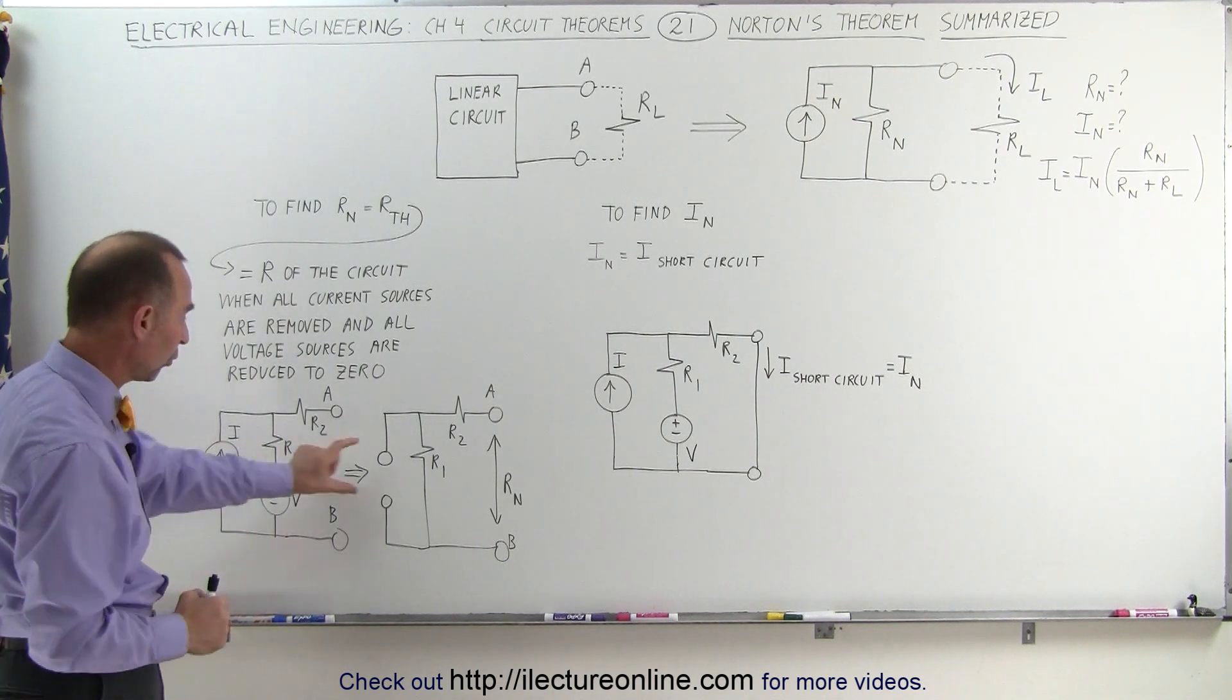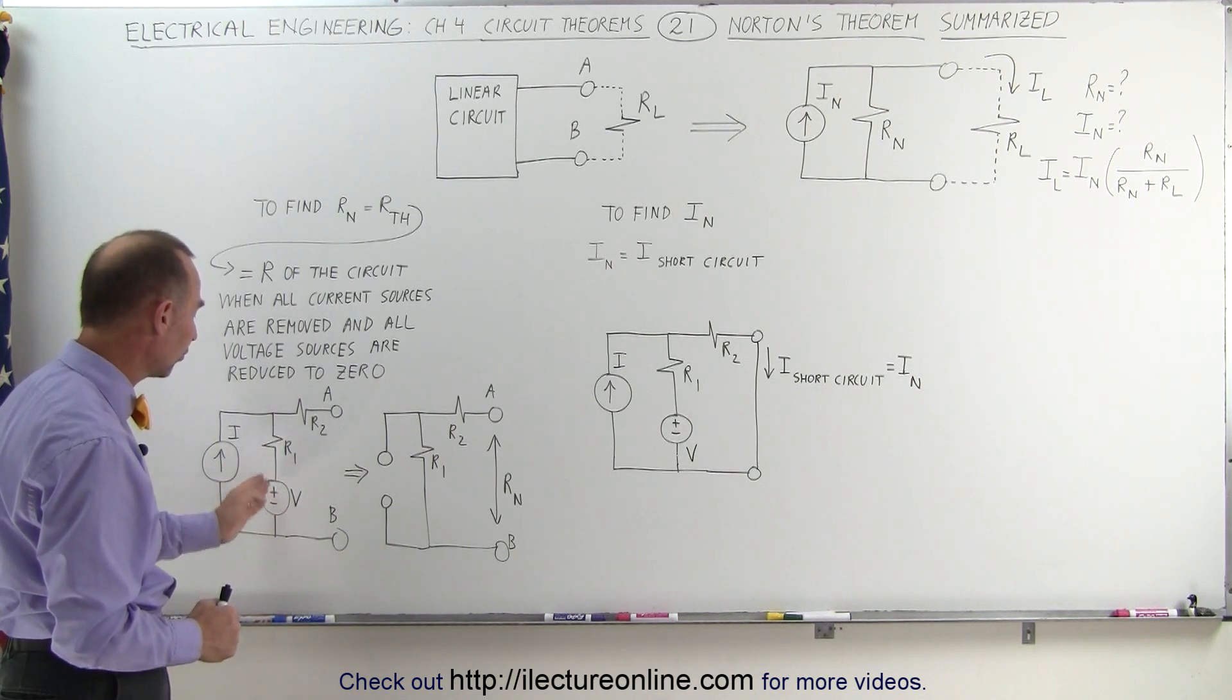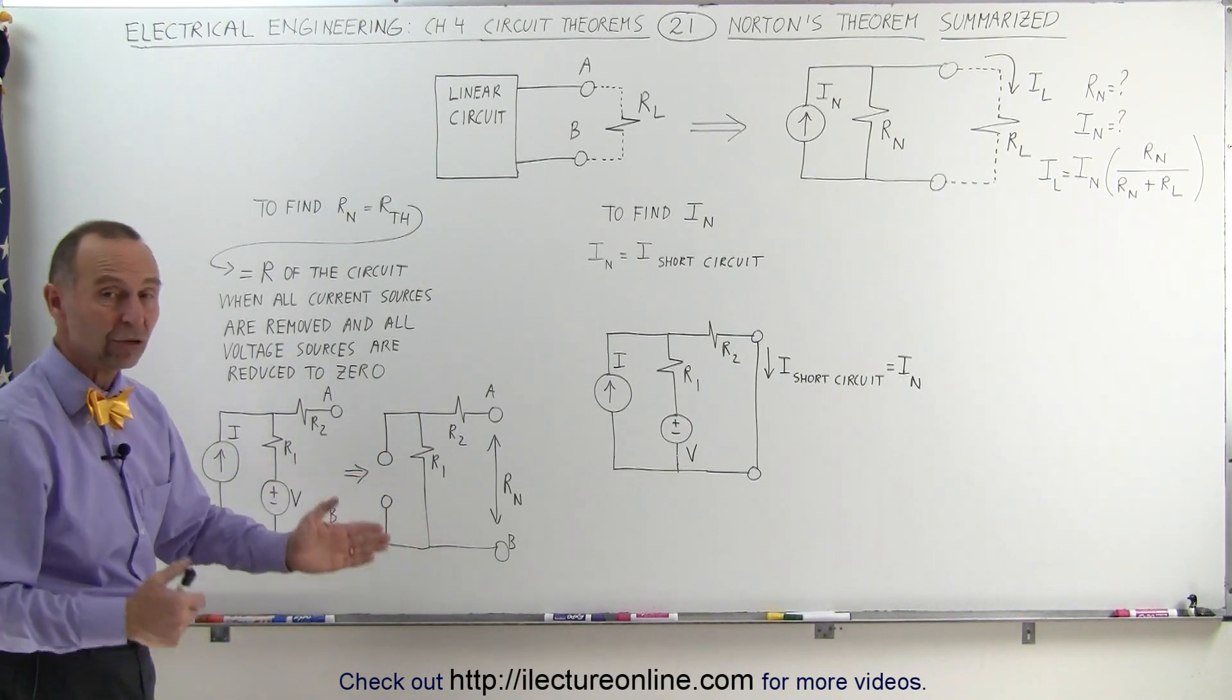We make that branch open and we set the voltage of the voltage source to zero, so it becomes just a short like that.